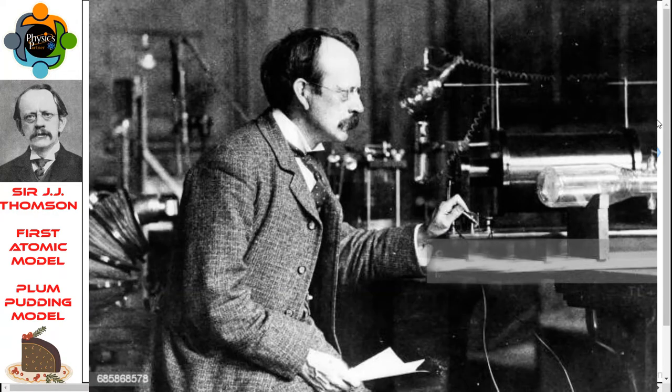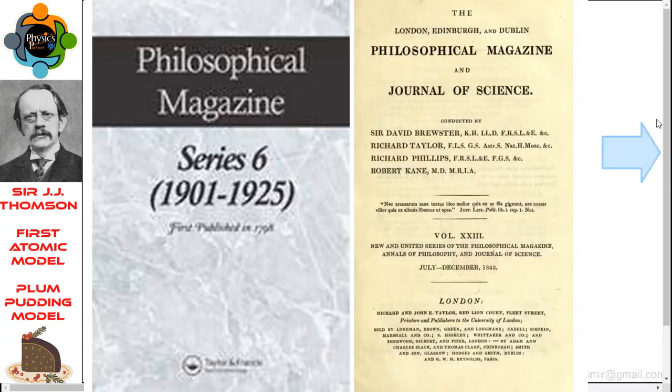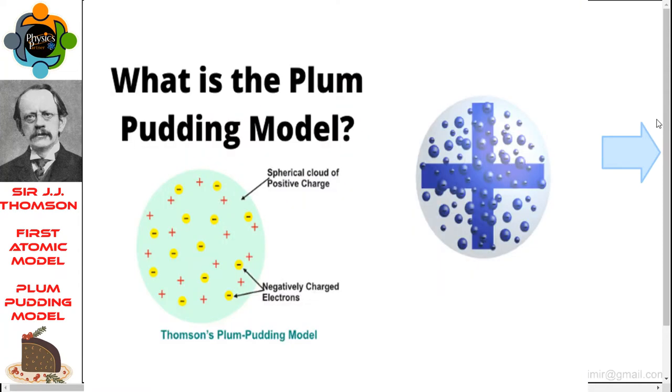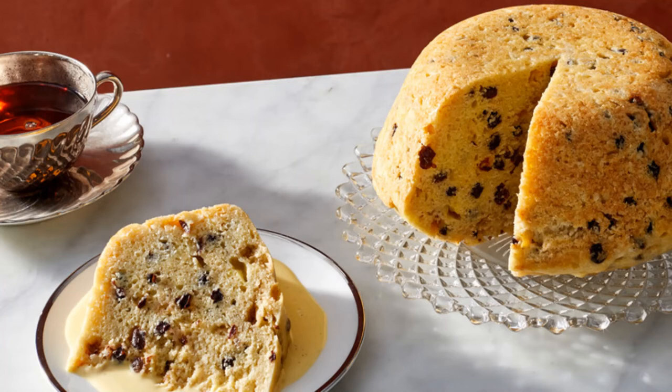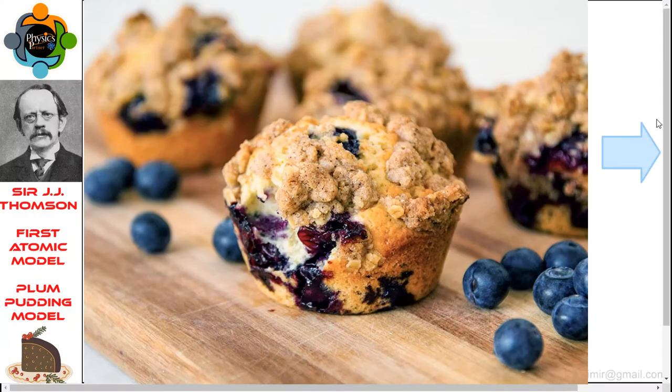the first atomic model, the plum pudding model, which appeared in a paper published in the Philosophical Magazine in March 1904. What is the plum pudding model? Plum pudding is actually an English dessert similar to a blueberry muffin.